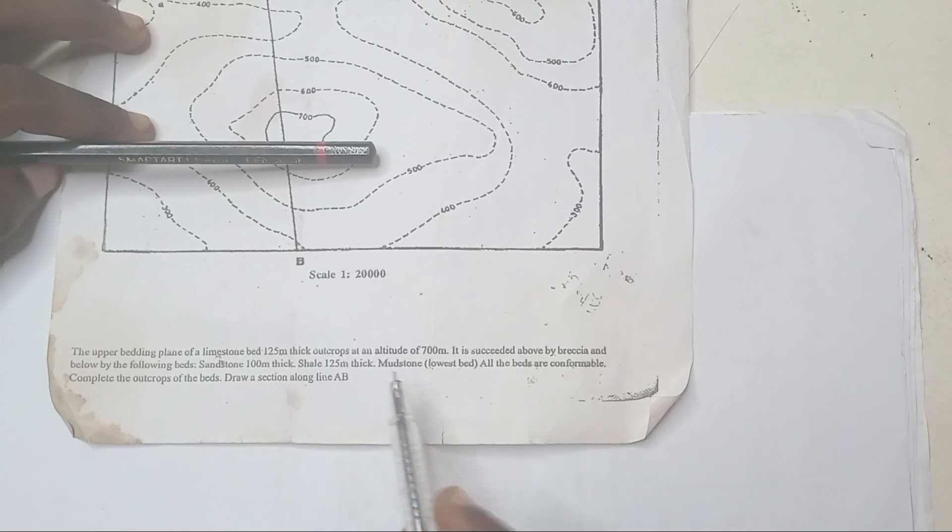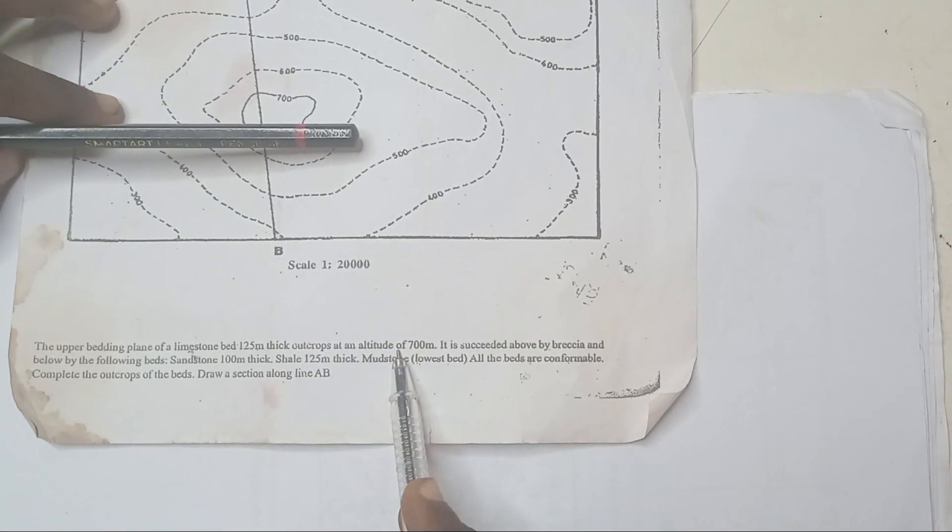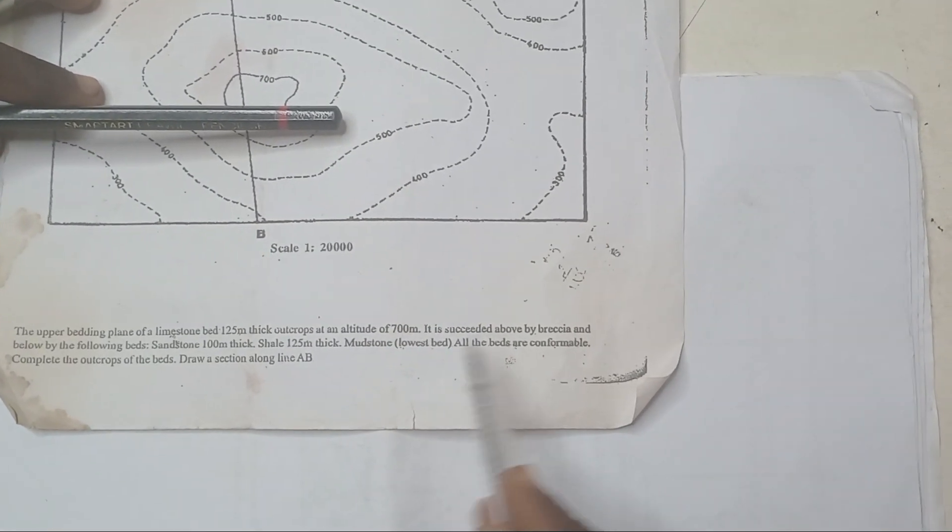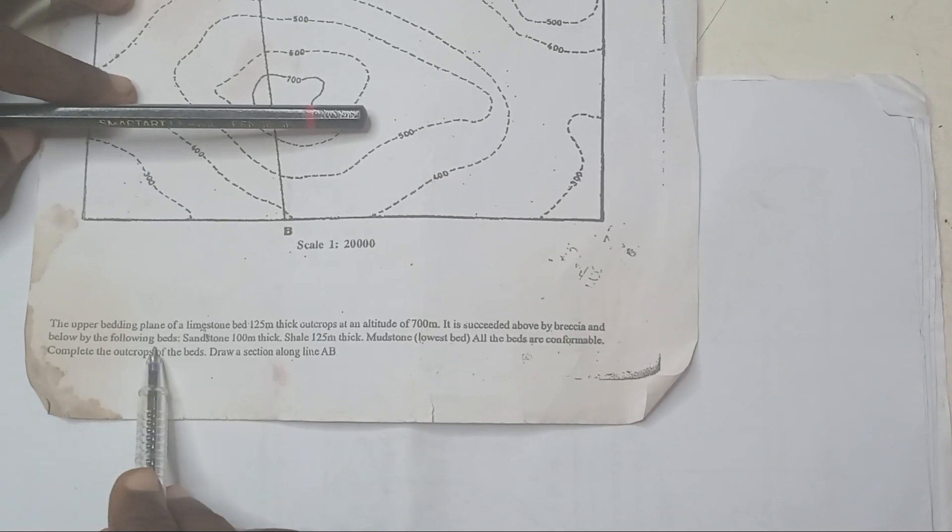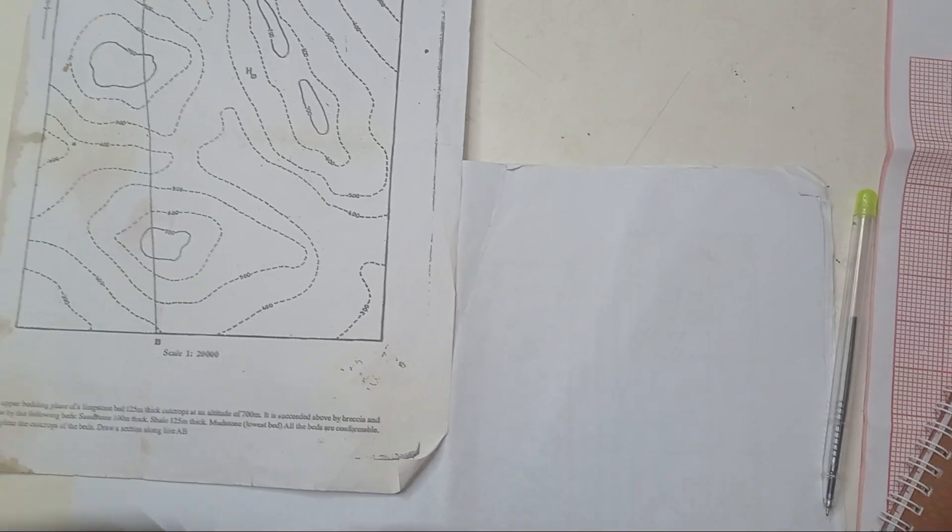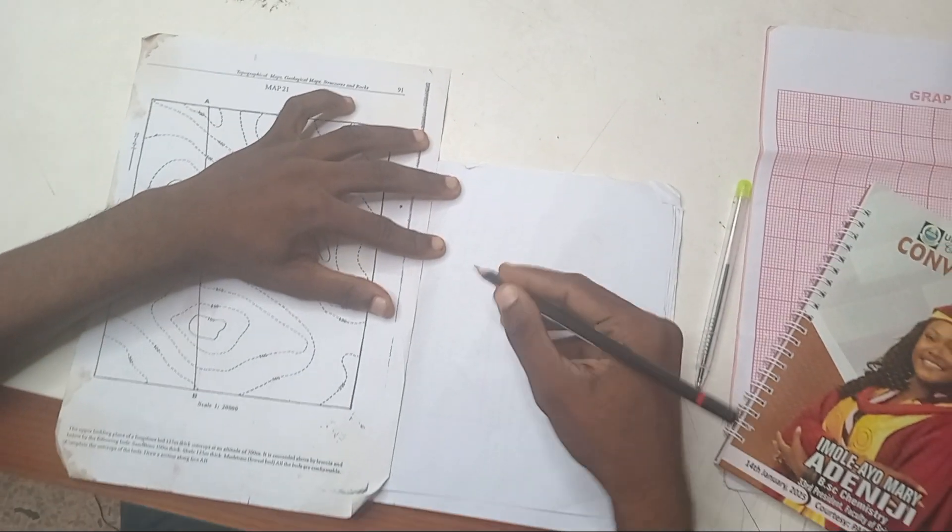125 meter thick, had crops at an altitude of 700 meter. It is succeeded above by a breccia and below by the following beds. Okay, to understand the question, let me give you a sketch.